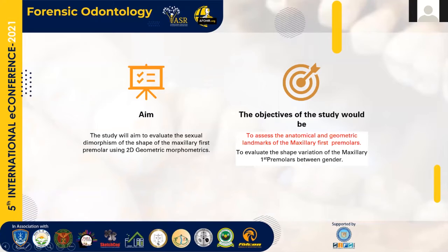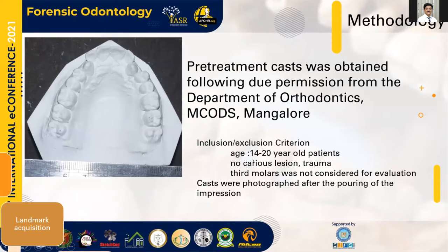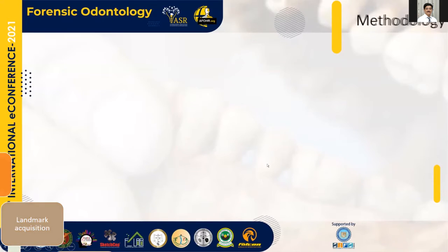Based on this idea, we developed a plan to identify the two-dimensional geometric morphometric analysis, mark the anatomic and geometric landmarks, and determine whether any sexual dimorphism is present. The whole process involved sample calculation, landmark acquisition, and statistical analysis calculated based upon the centroid from an earlier article. We arrived at a sample of around 55 casts.